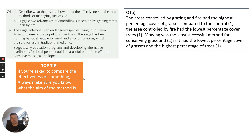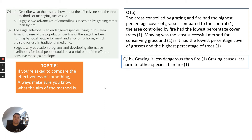Top tip: if you're being asked to compare the effectiveness of something, always make sure you know what the aim of the method is. The aim here is to increase the amount of steppe grassland. For part B — suggest two advantages of controlling succession by grazing rather than fire — grazing is less dangerous than fire, particularly if there are other species or buildings around, and grazing causes less harm to other species than fire.